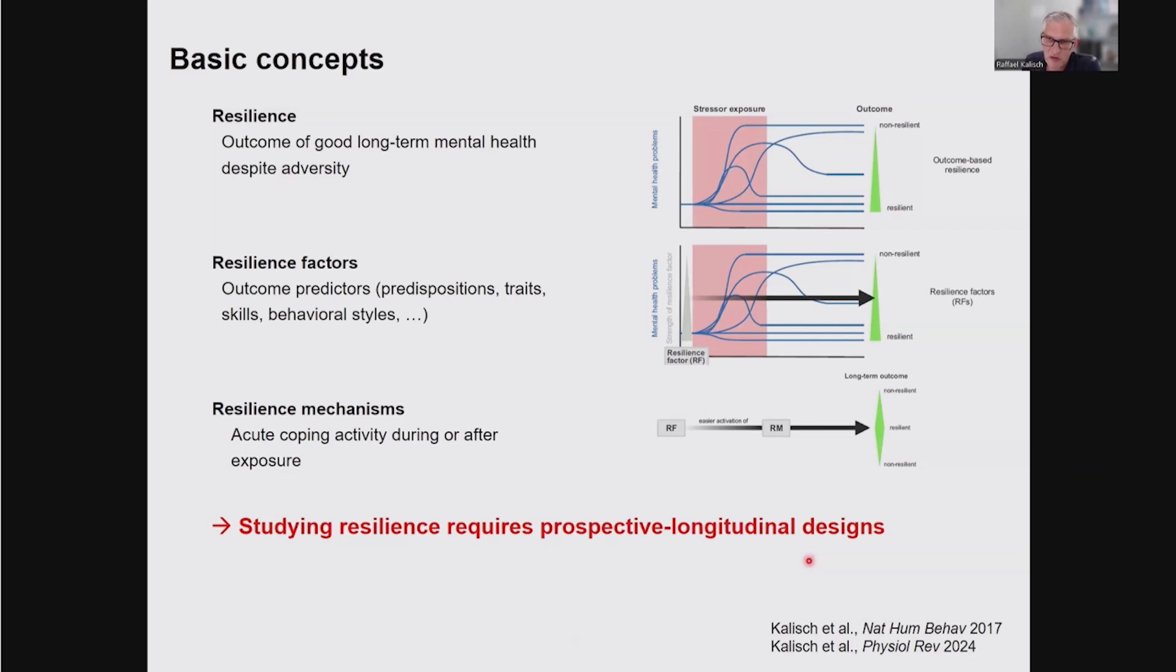Already from these definitions, you can guess that you can really only look at this in prospective longitudinal studies. You need to quantify and look at stressor exposure. There's no resilience without stress exposure. But you also need to quantify those stresses and put them into the equation, because someone who is less exposed is more likely to stay on the good side of life. If you don't factor that out, if you don't control for stressor exposure, then you might just come out with a trivial result that doesn't tell you anything about individual differences in coping.